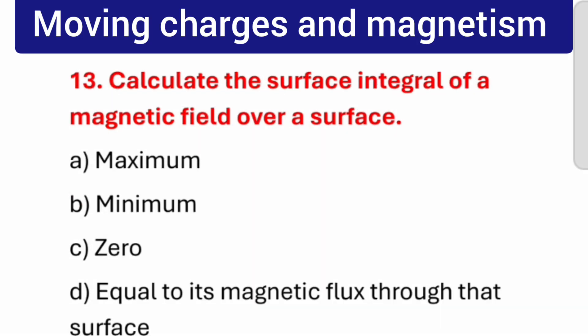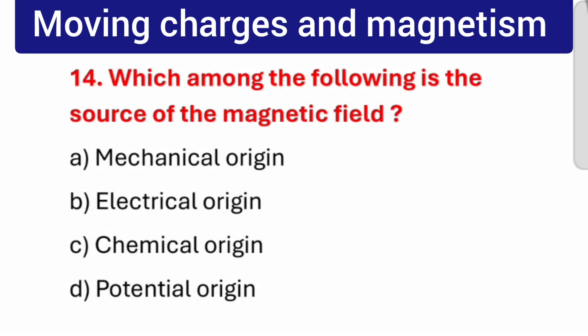Question number 13: Calculate the surface integral of a magnetic field over a surface. The correct answer is equal to its magnetic flux through that surface. Question number 14: Which among the following is the source of the magnetic field? The correct answer is electrical origin.